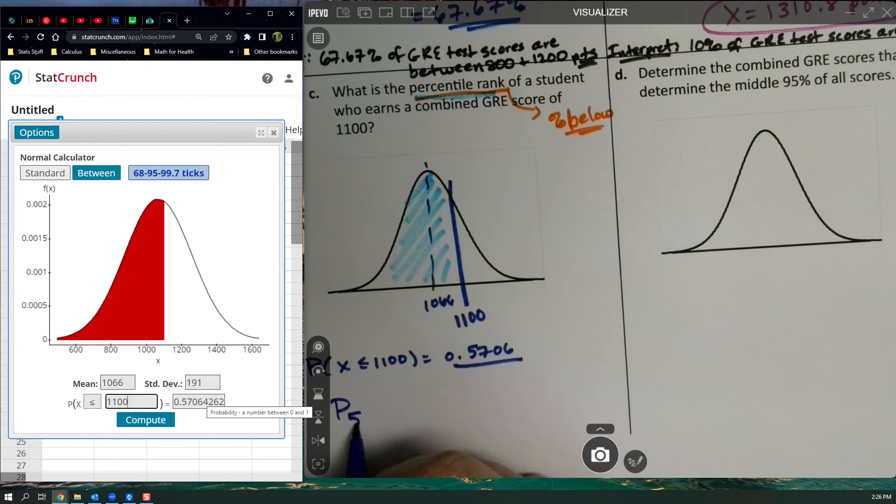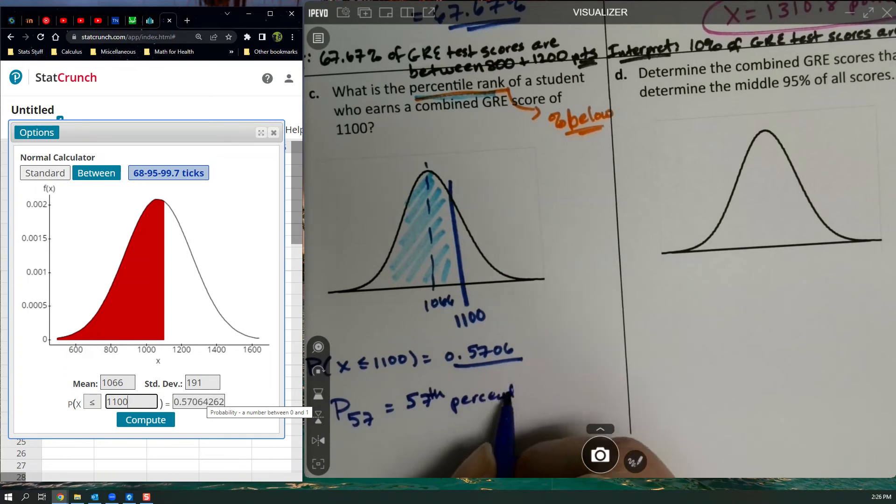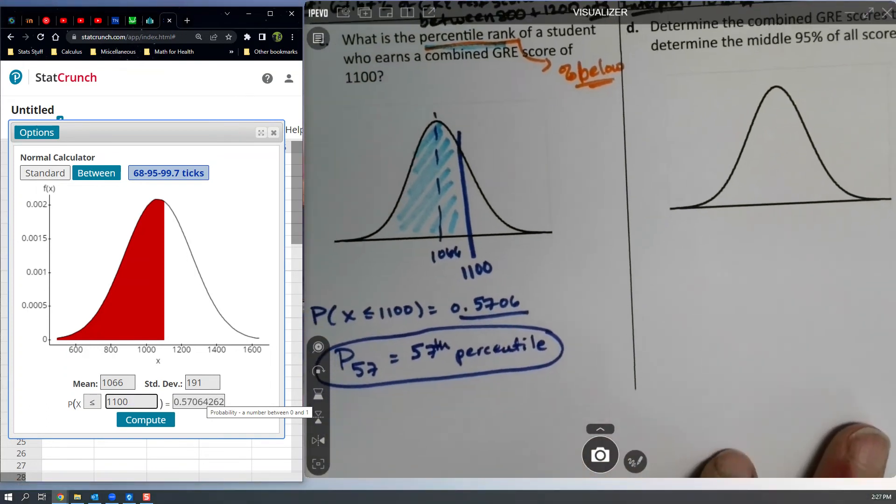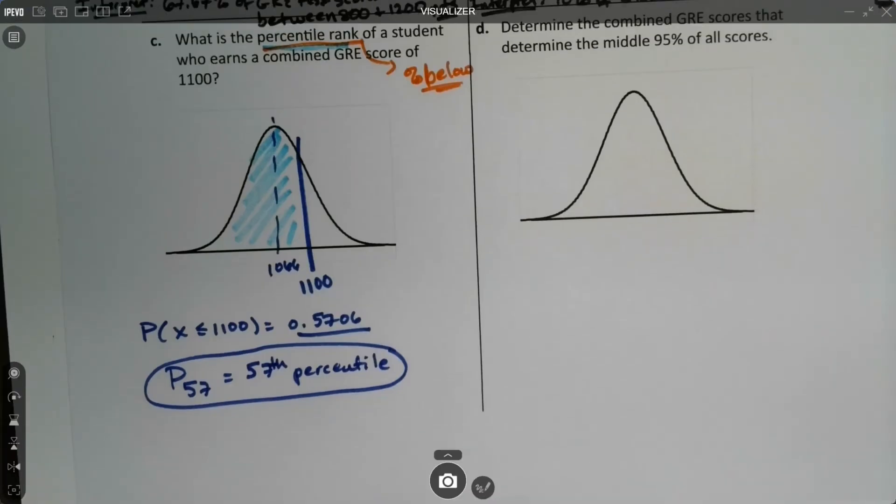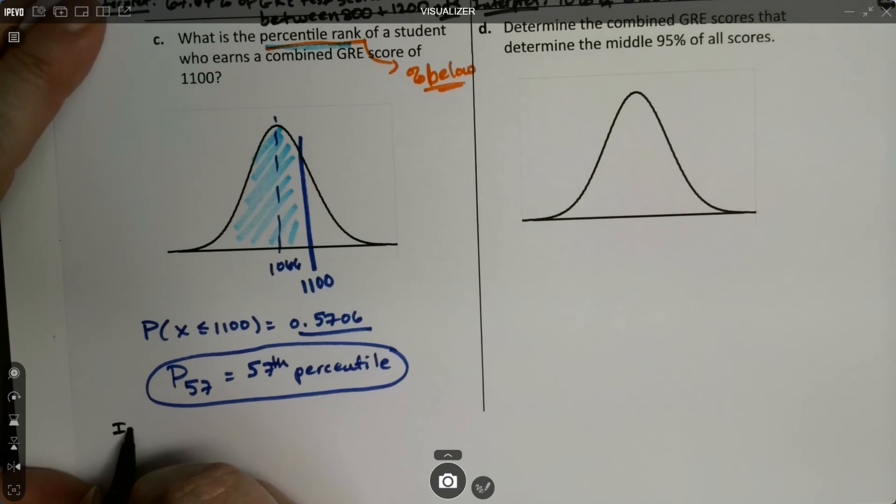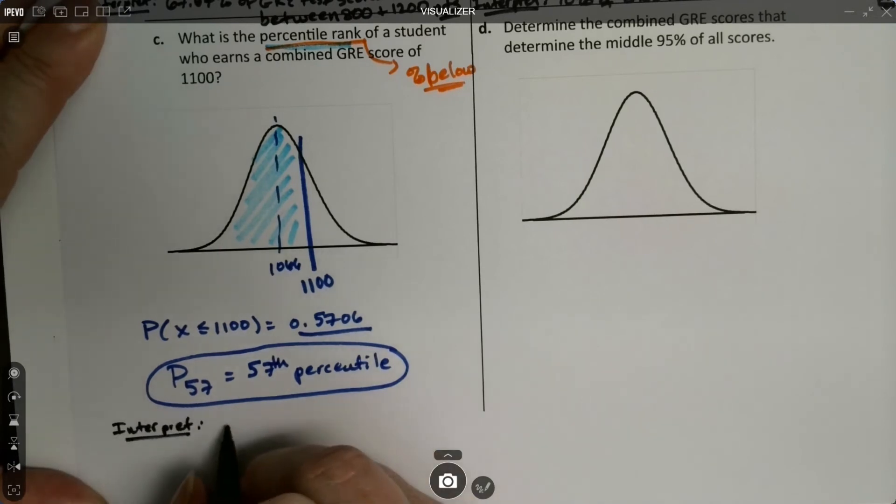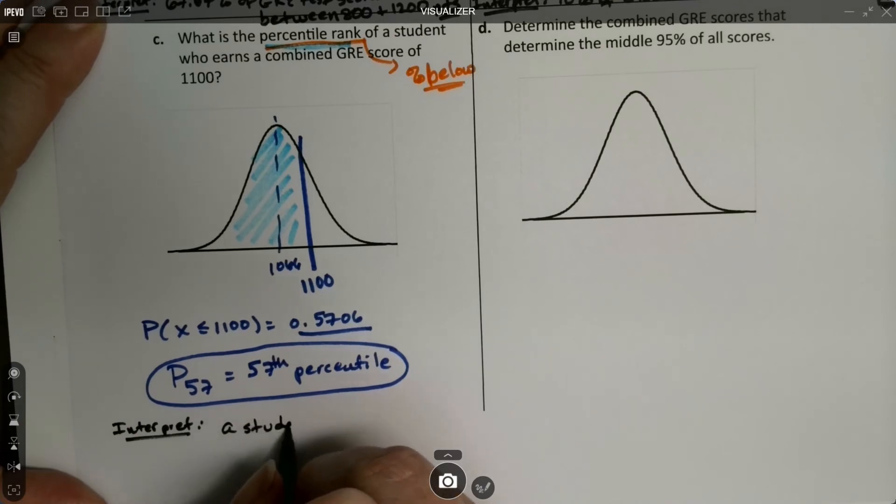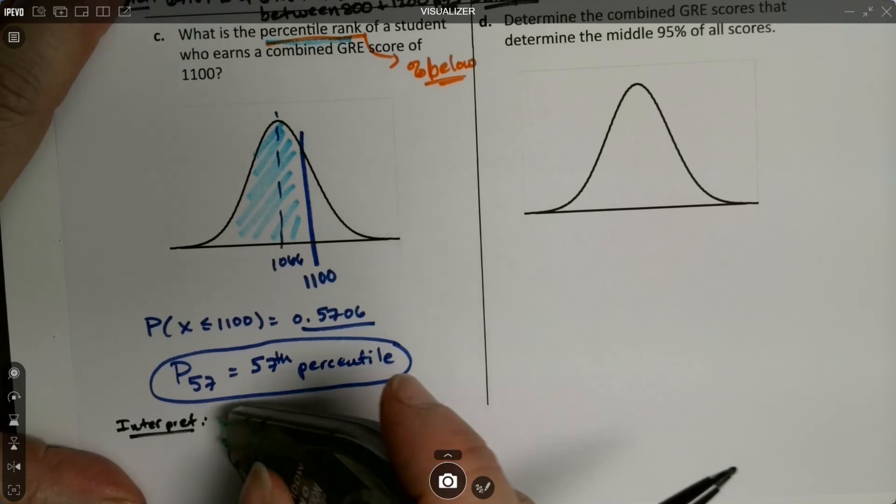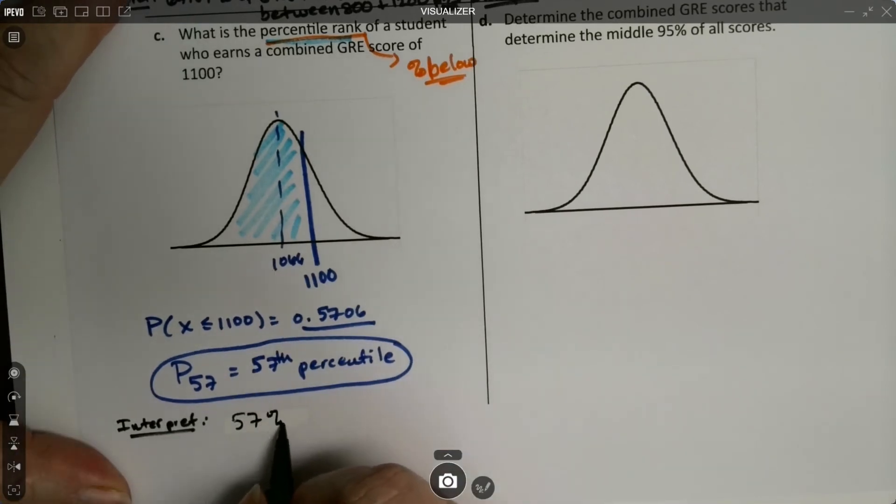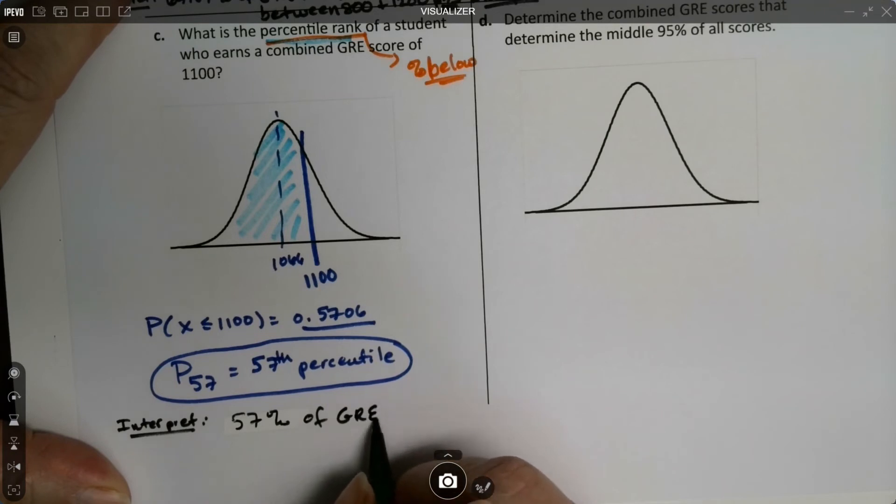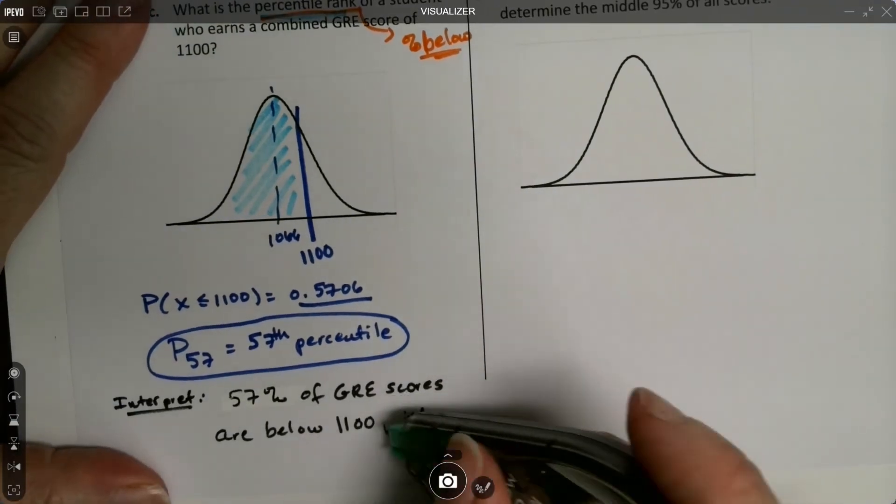So you think that's the answer. It's not. The answer is actually P57 or the 57th percentile. And again, I didn't ask for this, but let me throw in a little interpretation piece for it. I think I will ask for sure. So 57% of GRE scores are below 1100 points. My word points got strange there.